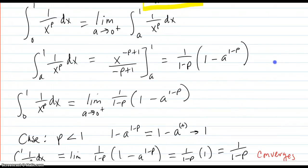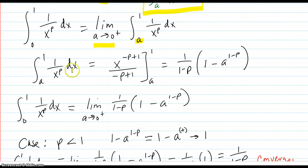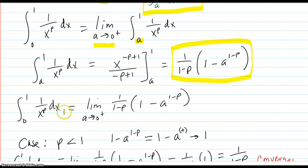Here's the integral. It's the usual limit statement, where a goes down to 0 from the right. That integrates nicely and ends up being this expression. Then the integral in question is going to be the limit as a goes down to 0 from the right of that expression.